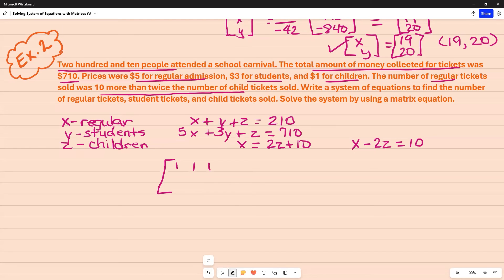On the top for my coefficients, I have 1, 1, 1, 5, 3, 1. And I'm looking at this one now. And that's going to be 1. I don't have a Y. So that's 0. And then negative 2. So now I'm going to multiply that times my variables, X, Y, and Z. And I'm setting it equal to my constants, which are 210, 710, and 10.